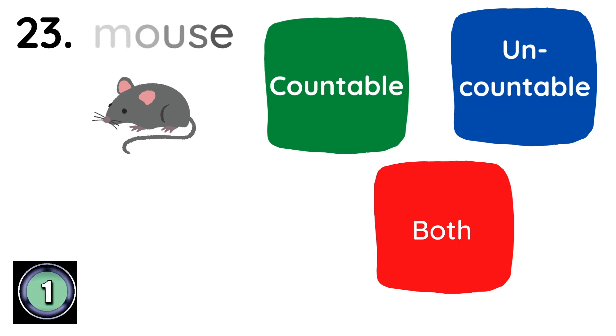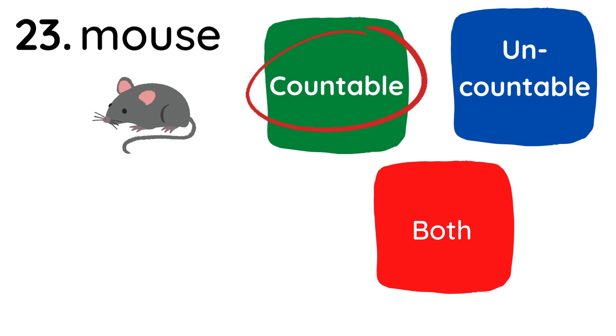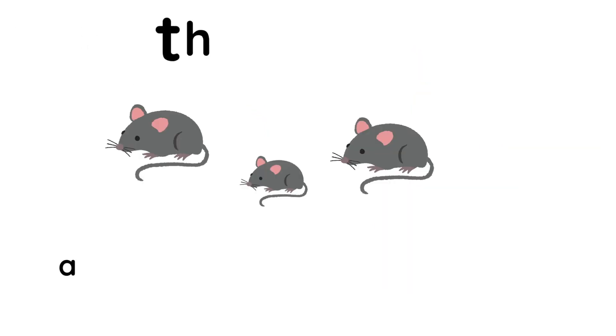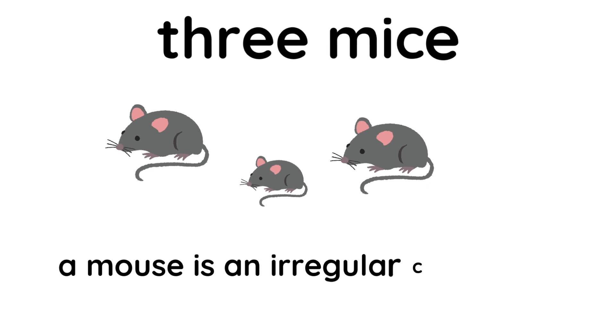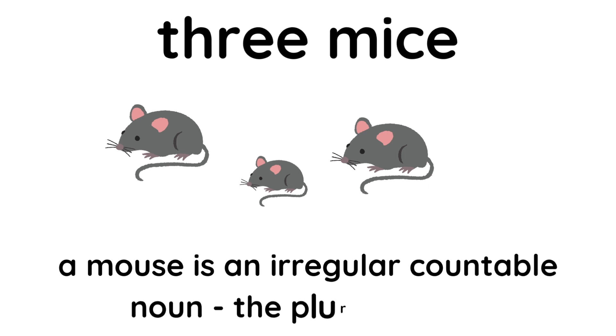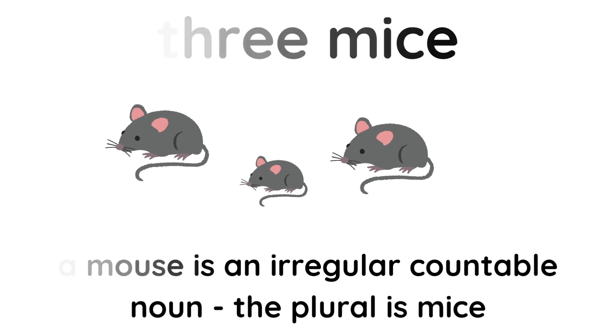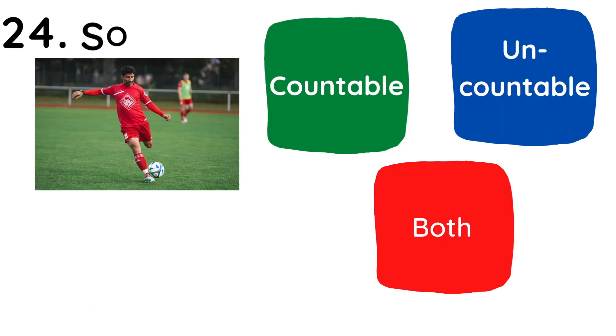Mouse. Countable. Three mice. Mouse is an irregular countable noun. The plural is mice. Soccer.